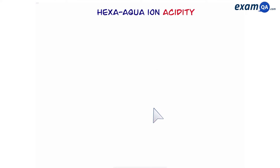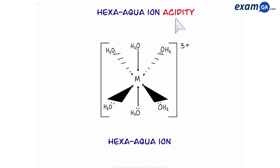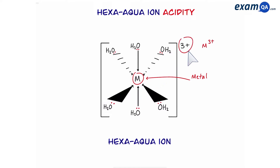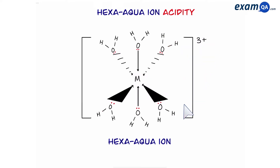Let's start with acidity. Here I have a metal hexa aqua ion. The M in the middle represents metal — you could have copper there, iron, aluminium, etc. The charge here tells us that the metal is a three plus ion. Since we're going to be talking about acidity, let's draw this like so.